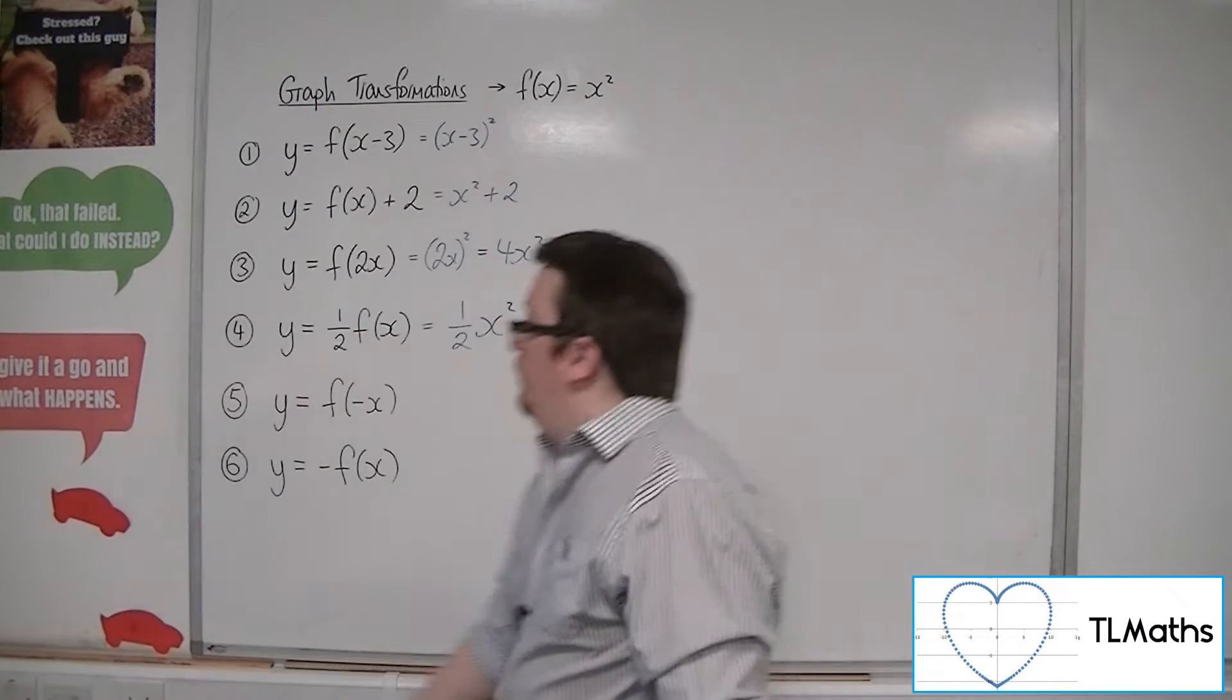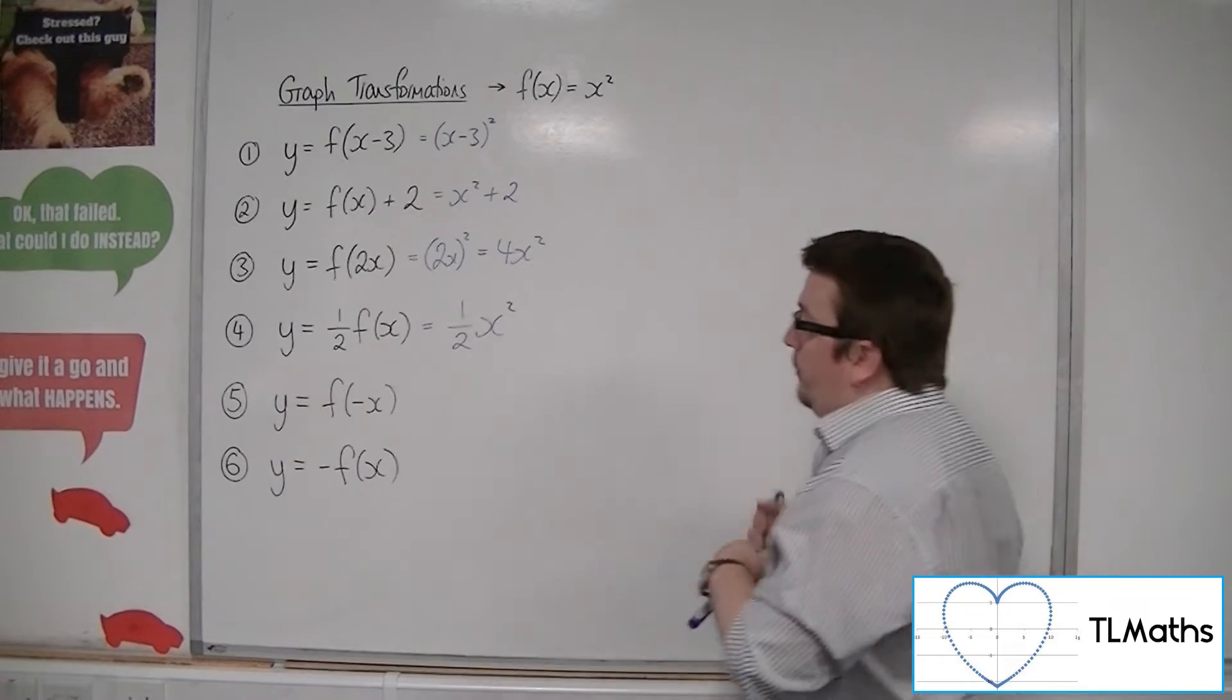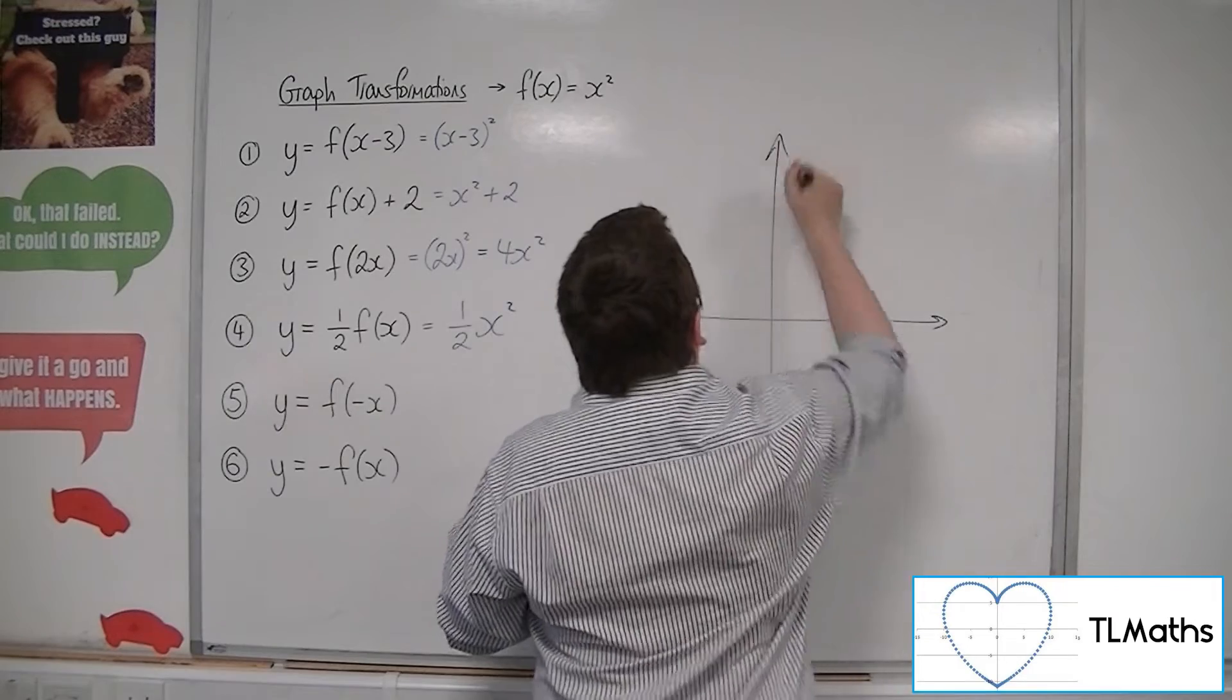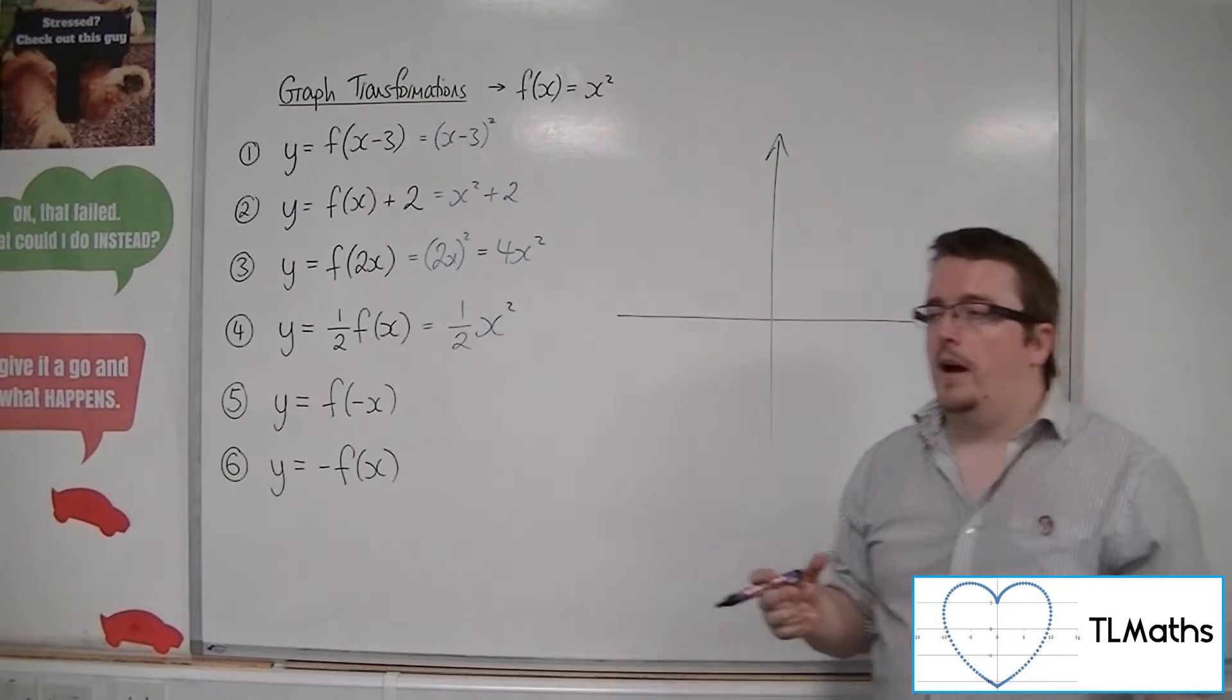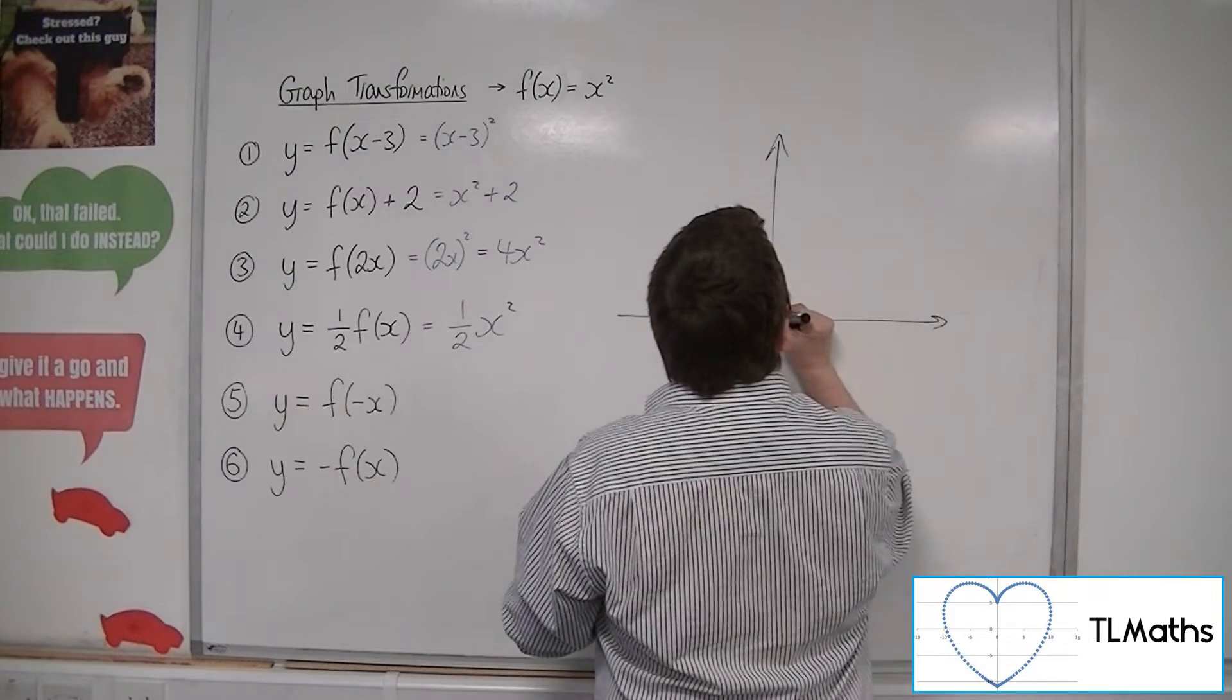Now for number 5, y equals f of minus x. Well, that is a reflection. Because the x has been changed to minus x, that will be a reflection in the y-axis.